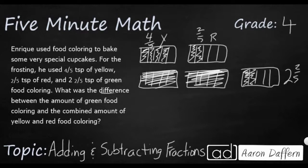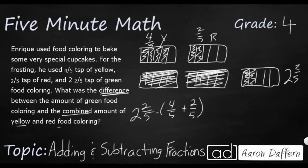Now, what is the difference? That means we need to subtract the green — two and two-fifths — minus the combined amount of yellow and red. Yellow and red is going to be four-fifths plus two-fifths. If I take my four and add two more, that's going to give me six-fifths. So I'm going to rewrite it, and it's going to be improper and that's going to be fine: six-fifths.